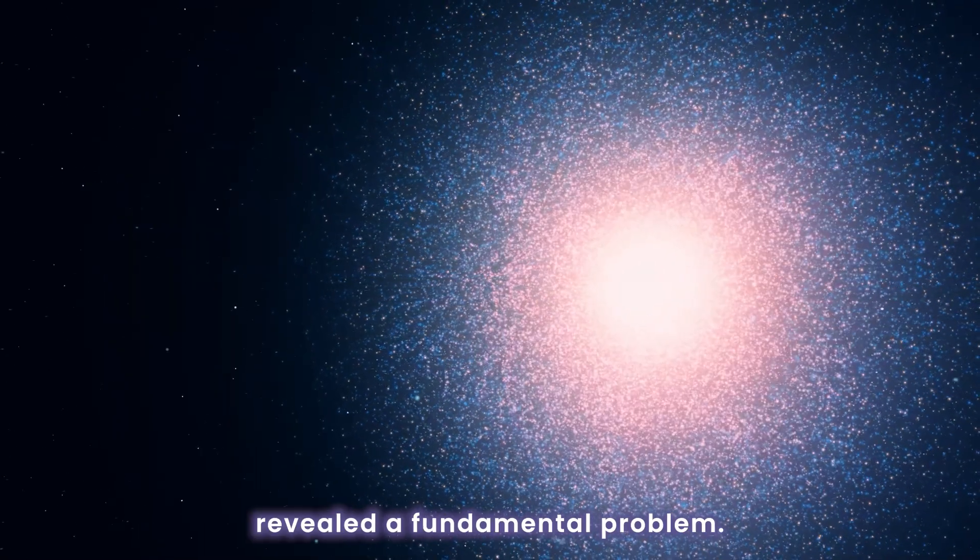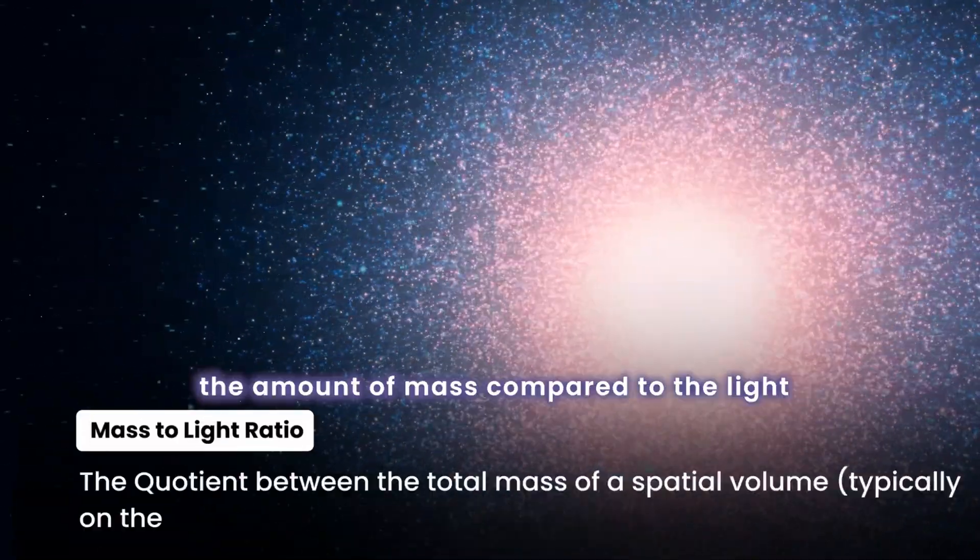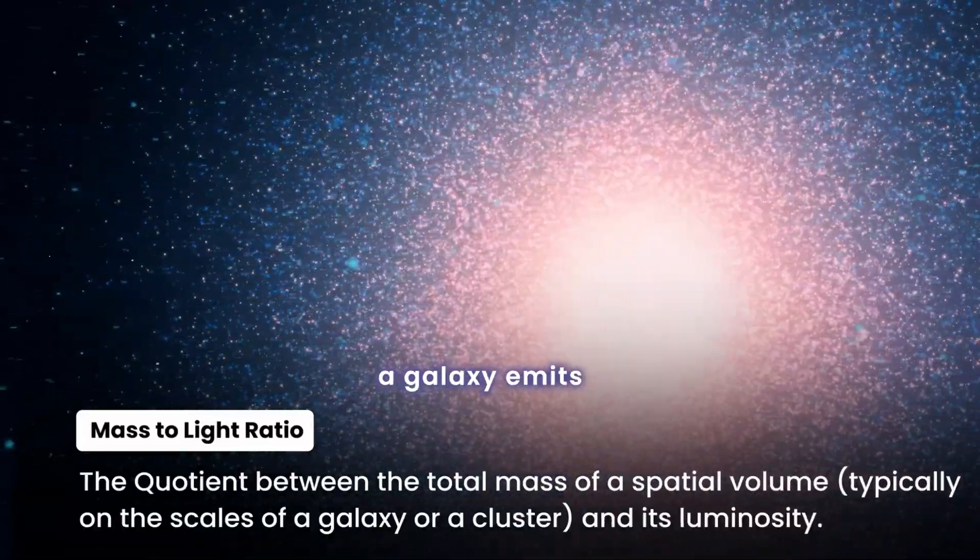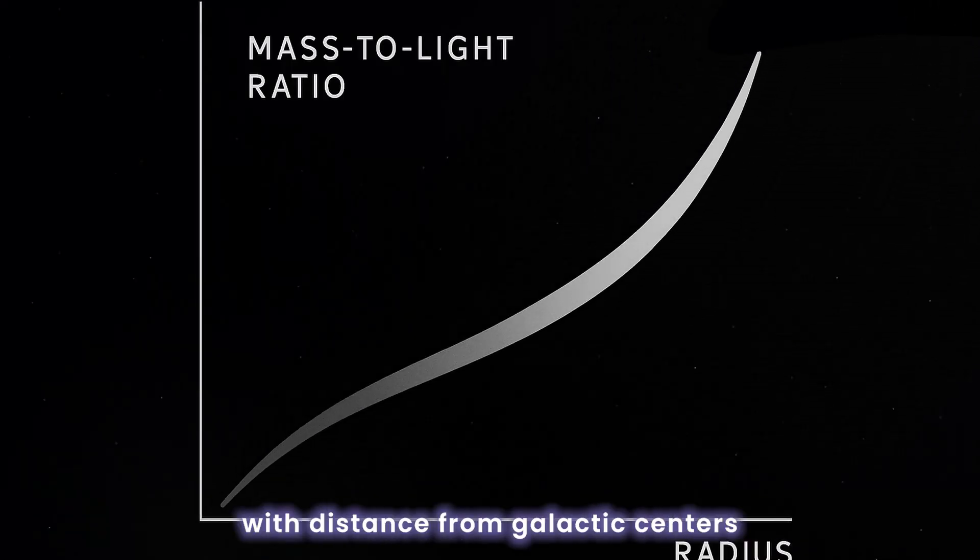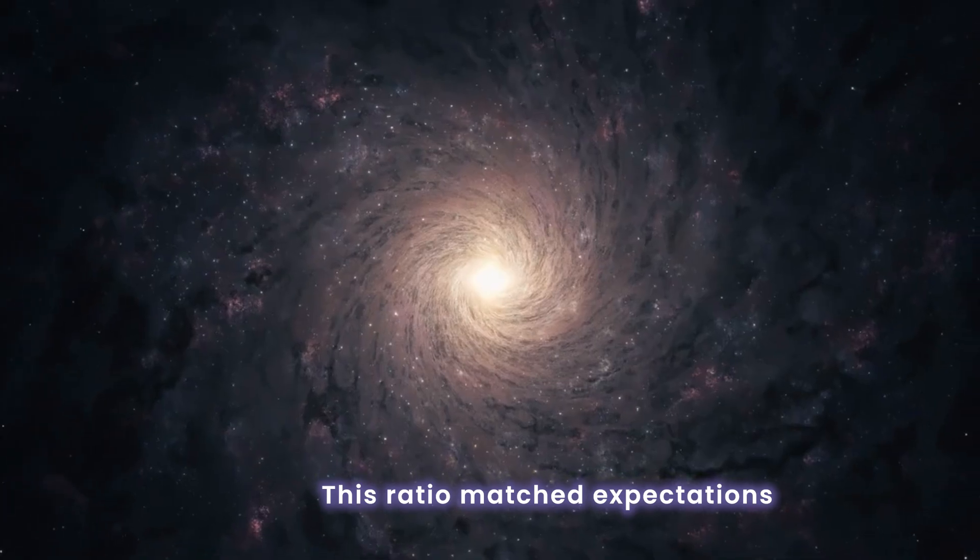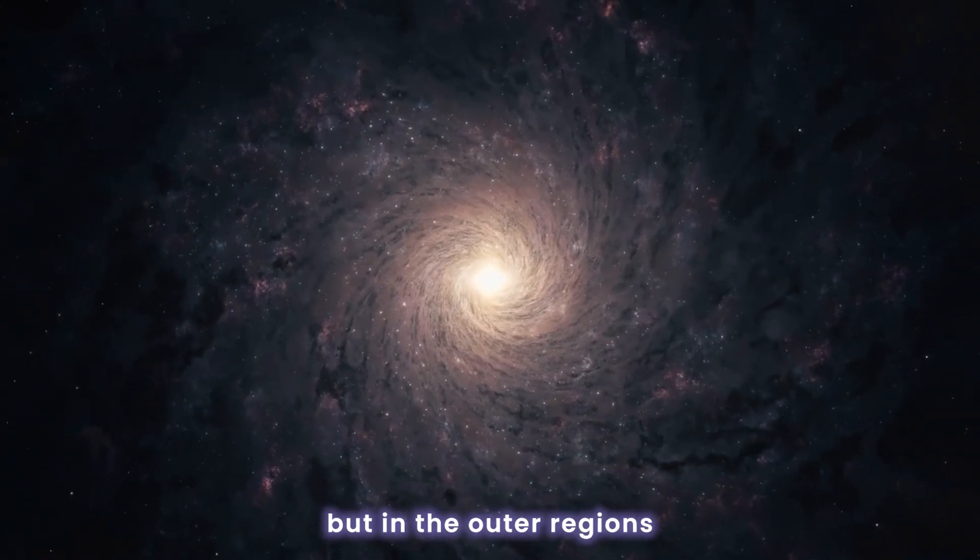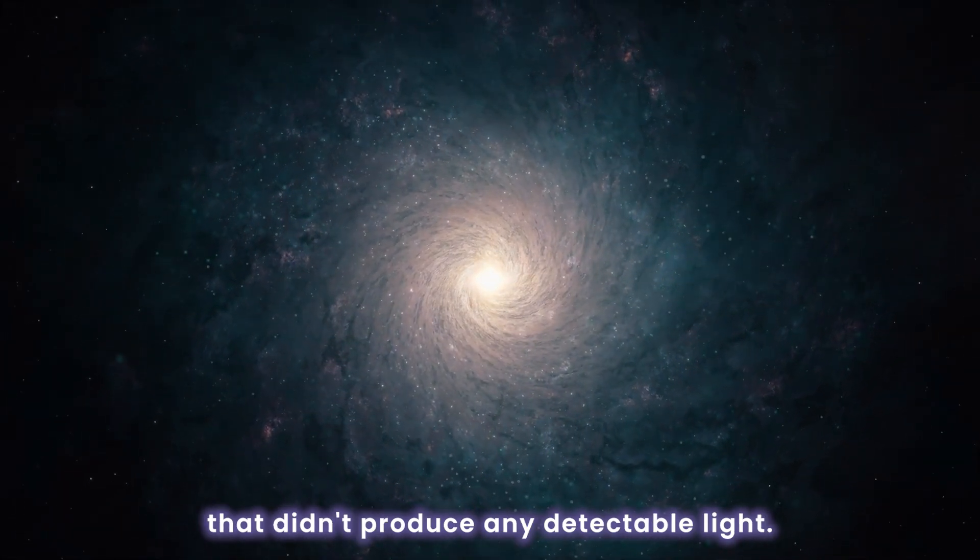Rubin's observations revealed a fundamental problem. The mass-to-light ratio—the amount of mass compared to the light a galaxy emits—increased dramatically with distance from galactic centers. In the inner regions of galaxies, this ratio matched expectations from visible stars. But in the outer regions, it suggested large amounts of mass that didn't produce any detectable light.